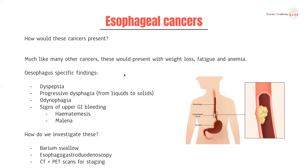How do esophageal cancers present? Typical cancer symptoms include weight loss, fatigue, and anemia. Specific esophageal symptoms include dyspepsia and progressive dysphagia — meaning they start off having difficulty swallowing big pieces of meat or chunky foods, and this gets progressively worse until they can't even swallow liquids. You can also have bleeds, as these tumors are hypervascular and can present with hematemesis — vomiting blood — or if it goes the other way, melena, which is digested blood producing black stools.